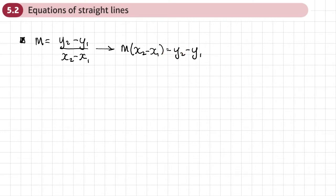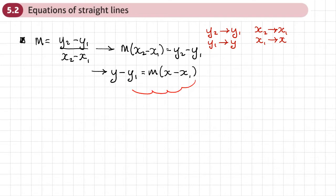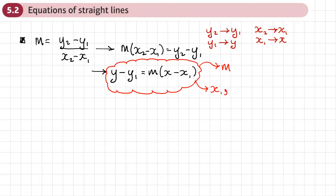If we flip it around and replace y2 with y and replace y1 with y1, and do the same with x — replacing x2 with x and x1 with x1 — we get the formula y minus y1 equals m times by x minus x1. This gives us a way of finding the equation of a straight line, where we need to know m and a coordinate x1, y1. We can use this expression to write an equation of a line once we know its gradient and a point that it passes through.